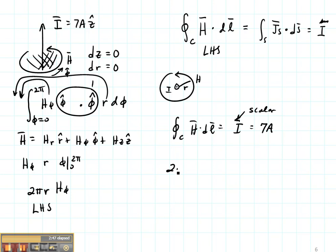So this is going to be two pi R H phi is equal to seven amps. So equating both sides, H phi is seven divided by two pi R. And that's going to be given in amps per meter.